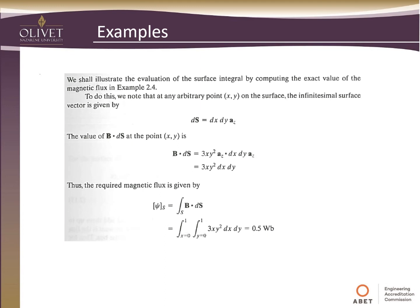Of course, as before, we could just integrate it and get the exact answer. So if we do this, in our dS, we can find that it's just the increment dx and dy, a_z. So if we come and evaluate this dot product, B dot dS, we have our 3xy squared a_z, which we were given, dotted with dx, dy, a_z. A_z dotted with a_z, checks out, that gives us 1. So we're just left with 3xy squared dx, dy.